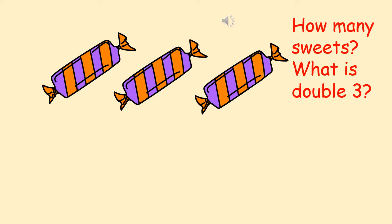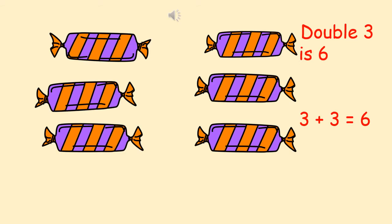How many sweets can you see now? What's double three? Double three is six. Three plus three equals six.